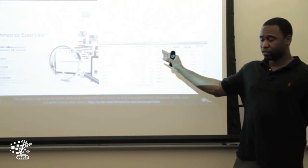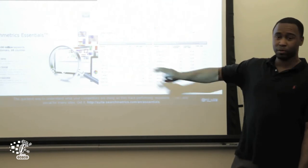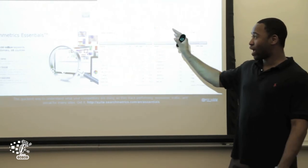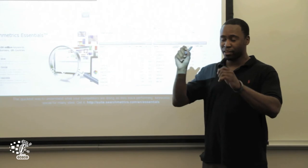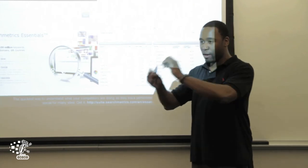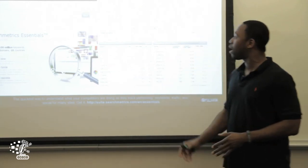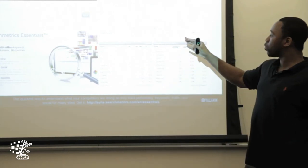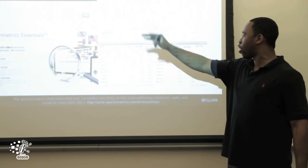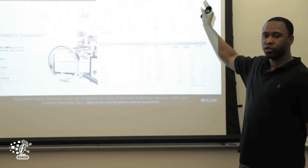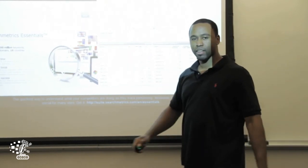Search Metrics Essentials is awesome for this. When I used to do this at Razorfish, I had to literally look through every site and page I was comparing. With this tool, you just put in a domain name or URL and it gives it all to you. Love those Germans.